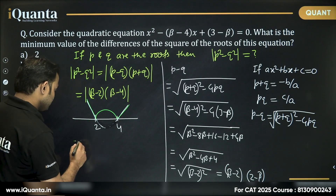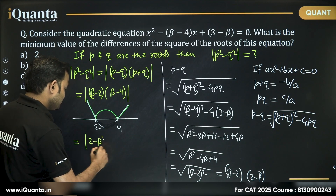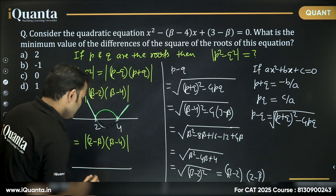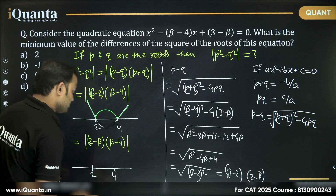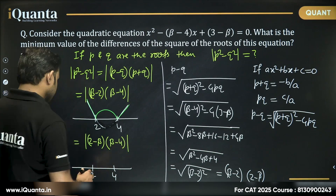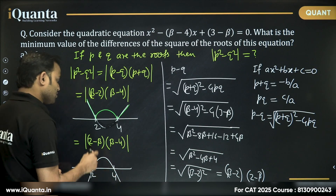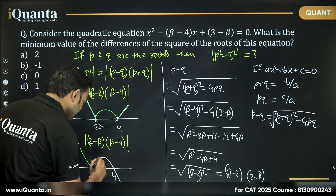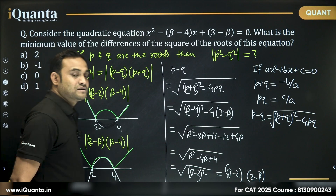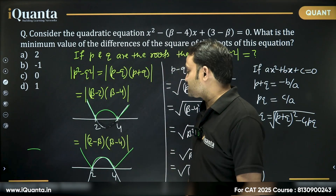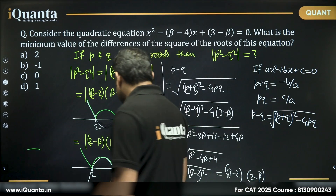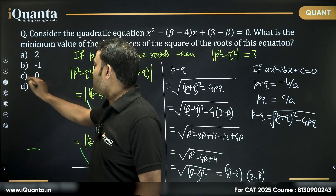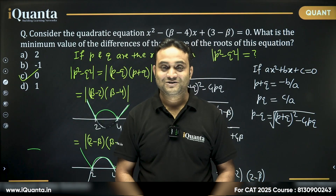If I take the second case, |(2 − β)(β − 4)|, the coefficient of β² is negative, so the original graph is an inverted parabola. But again, taking the mod makes all the negative region positive. This green graph shows mod of (2 − β)(β − 4), and again the minimum value is 0. So our answer for this question will be option C. Thank you.